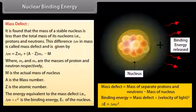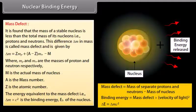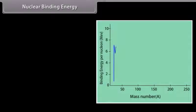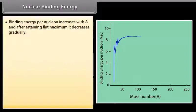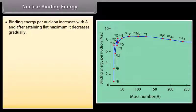The energy equivalent to the mass defect, that is delta m times c square, is the binding energy Eb of the nucleus. From the graph, we note that binding energy per nucleon increases with A, and after retaining flat maximum, it decreases gradually.